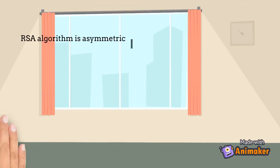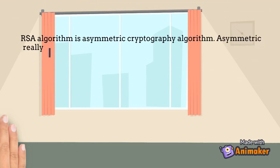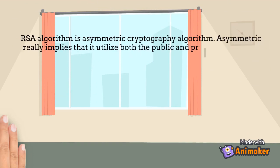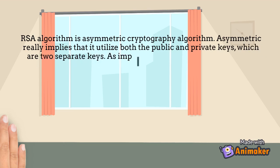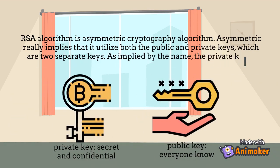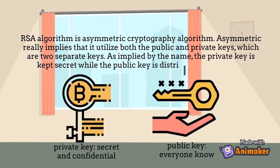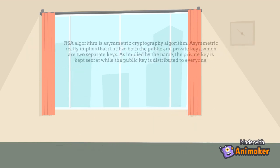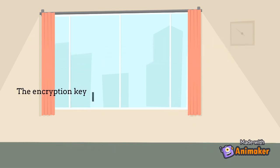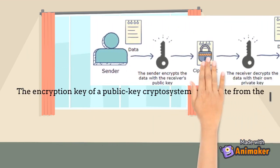The RSA algorithm is an asymmetric cryptography algorithm. Asymmetric implies that it utilizes both a public key and a private key — two separate keys. As implied by the name, the private key is kept secret while the public key is distributed to everyone. The encryption key of a public key cryptosystem is separate from the decryption key.